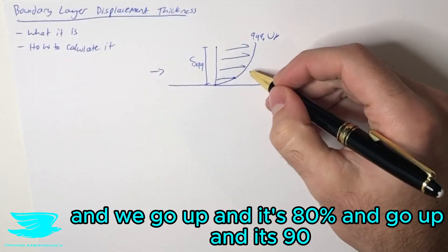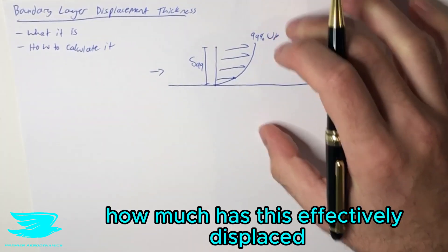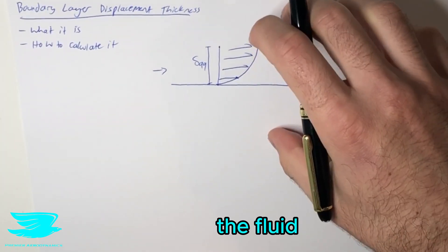And then we go up and it's 80% and go up, it's 90% and we finally get to 99%. So the question is, how much has this effectively displaced the fluid?